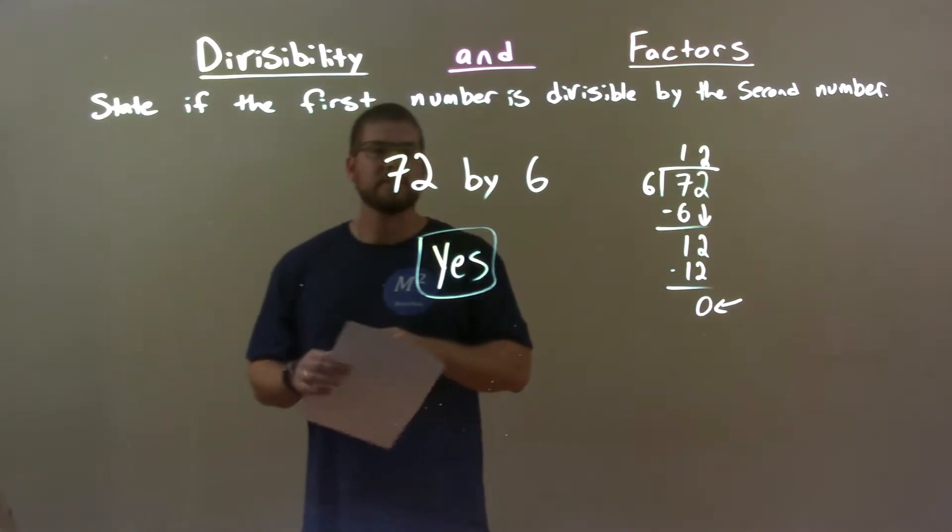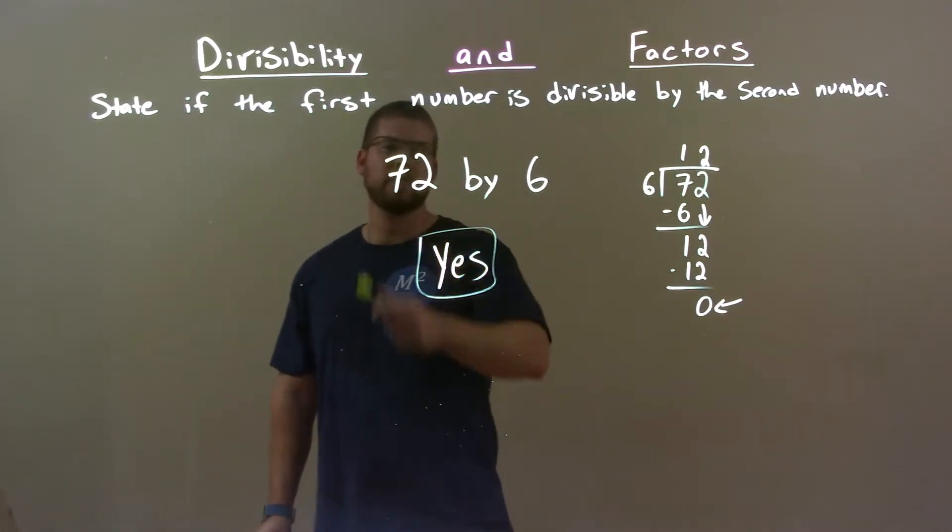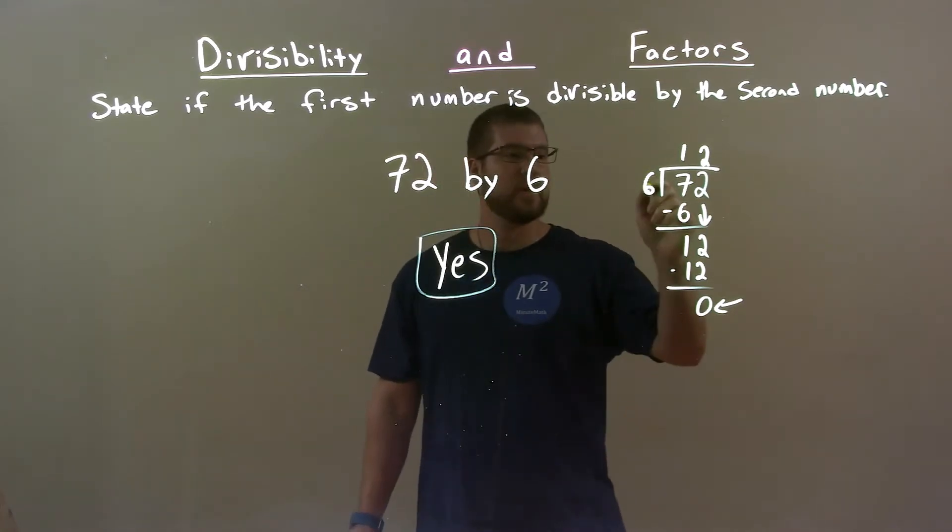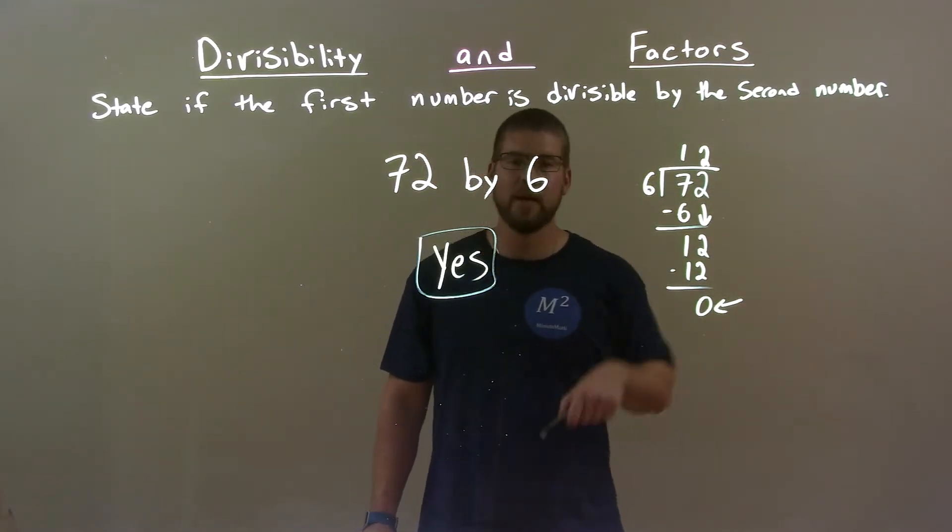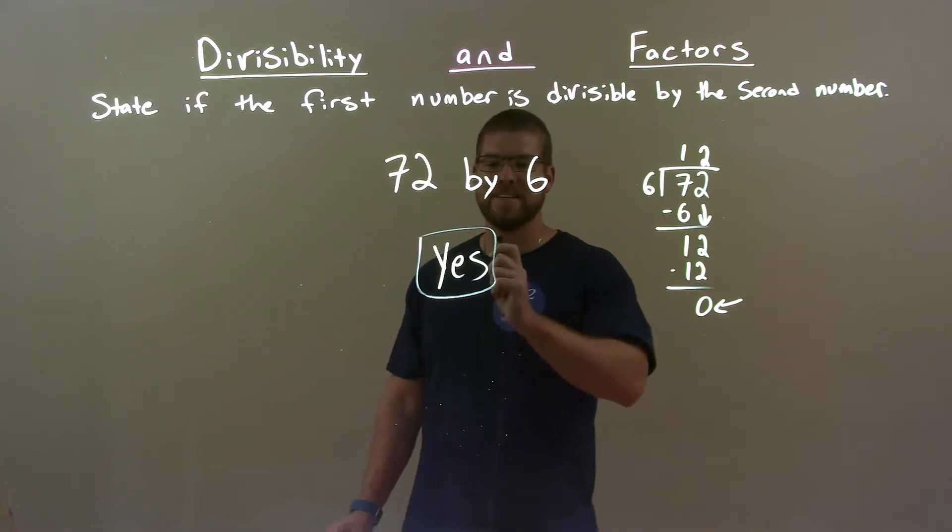Quick recap. We're given 72 by 6. Is 72 divisible by 6? Well, we did long division. 6 goes into 72. We found that went evenly 12 times. We had no remainder. So, final answer is just yes.